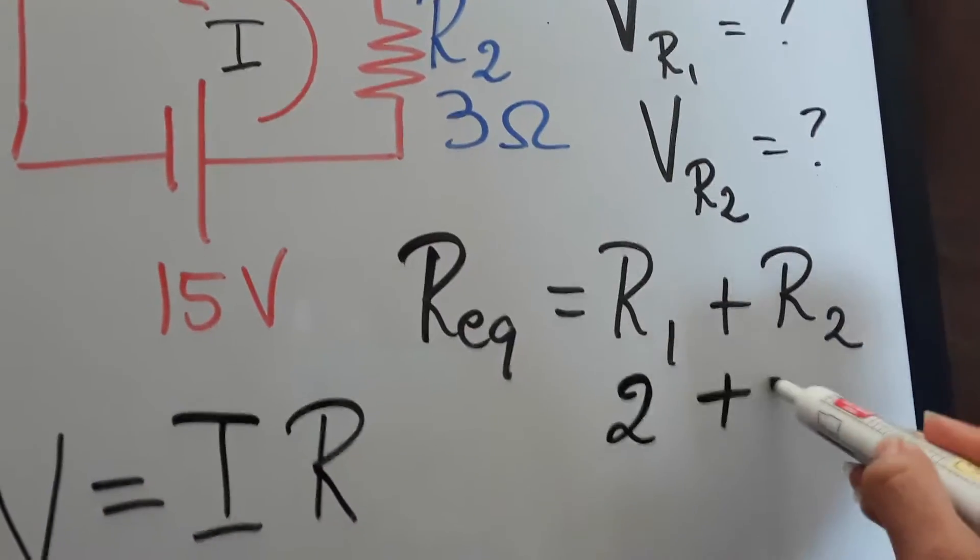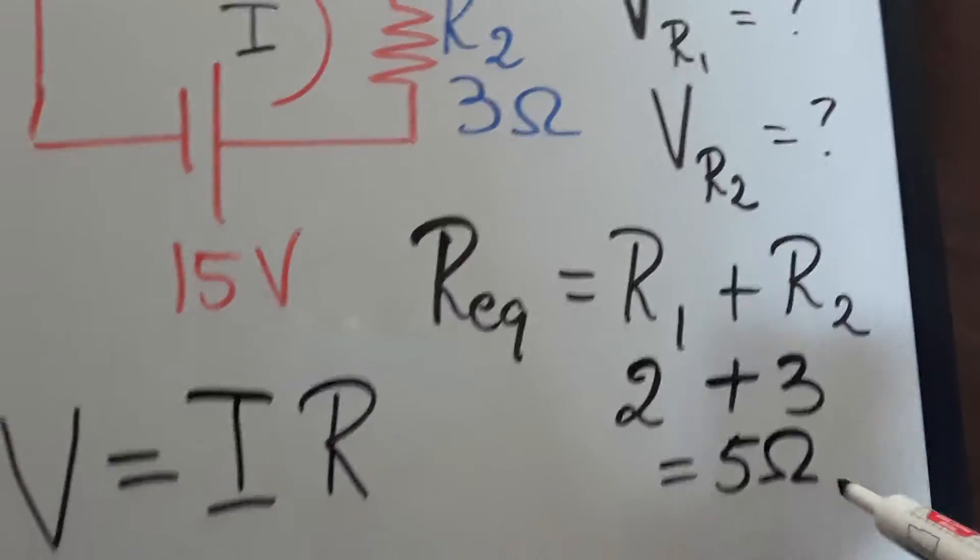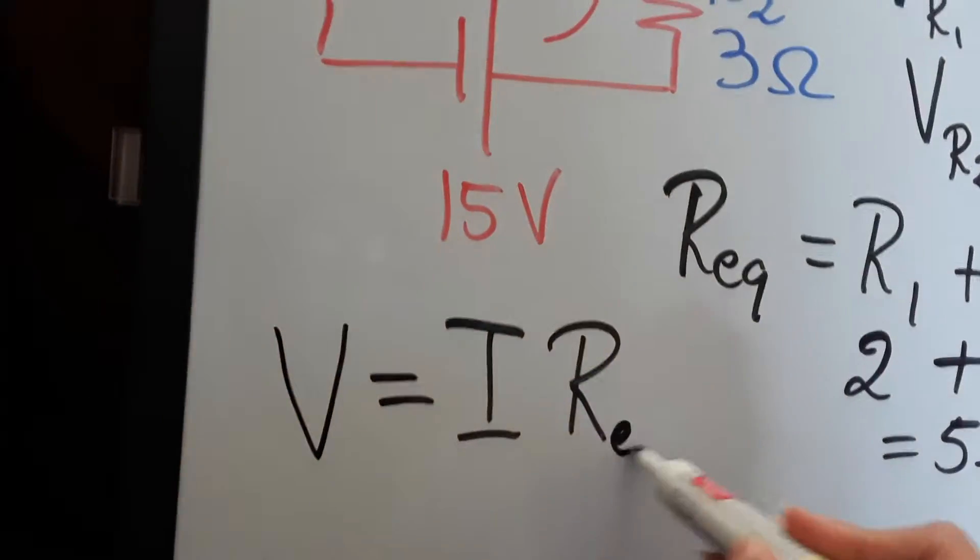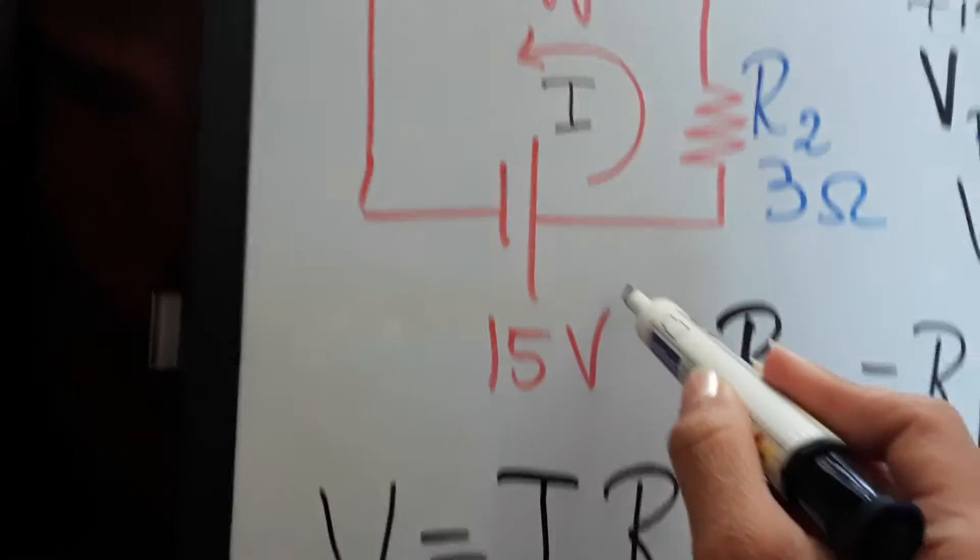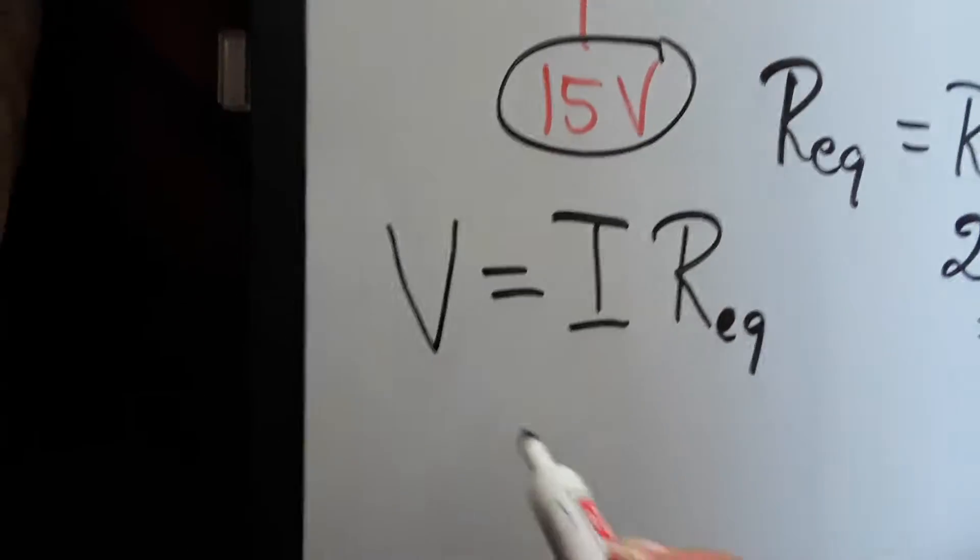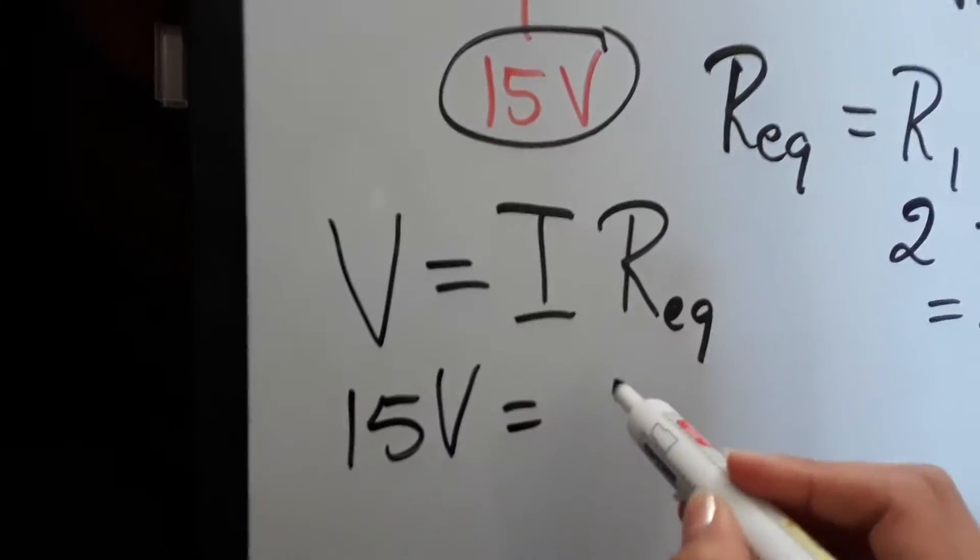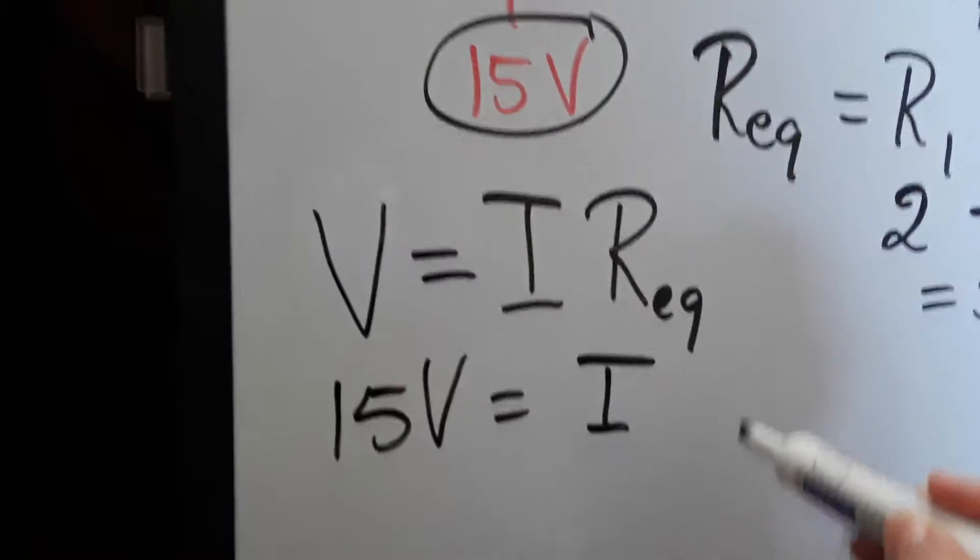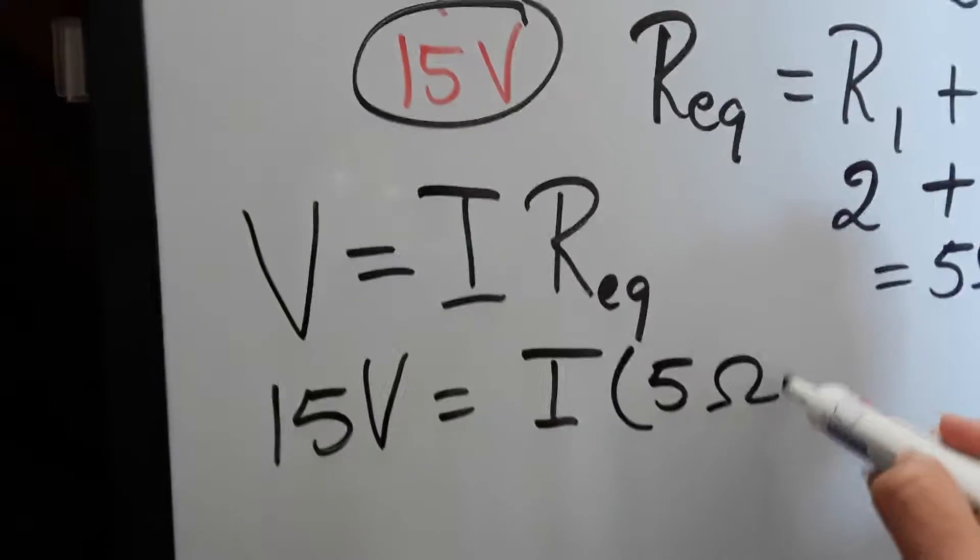So we're going to have two plus three, and that's going to be equal to five Ohms. And that's going to be our R equivalent. So we're going to use here R equivalent. We have the voltage, and that's 15 volts. So we're going to have 15 volts equals I times R equivalent, which is just five Ohms.